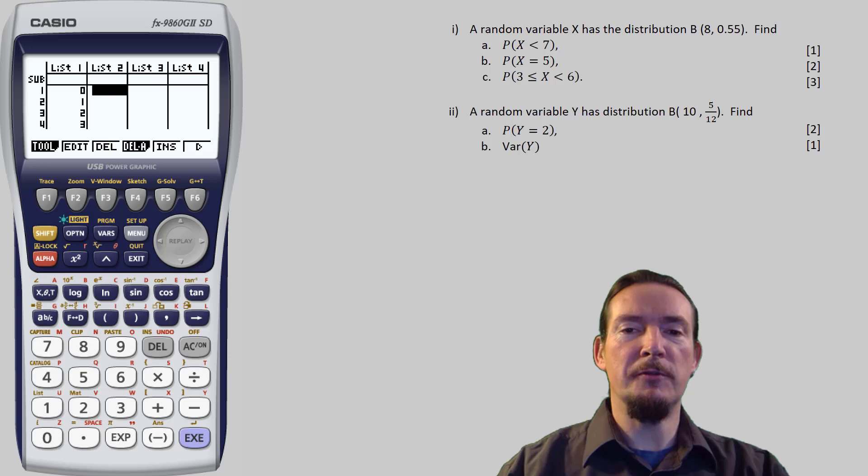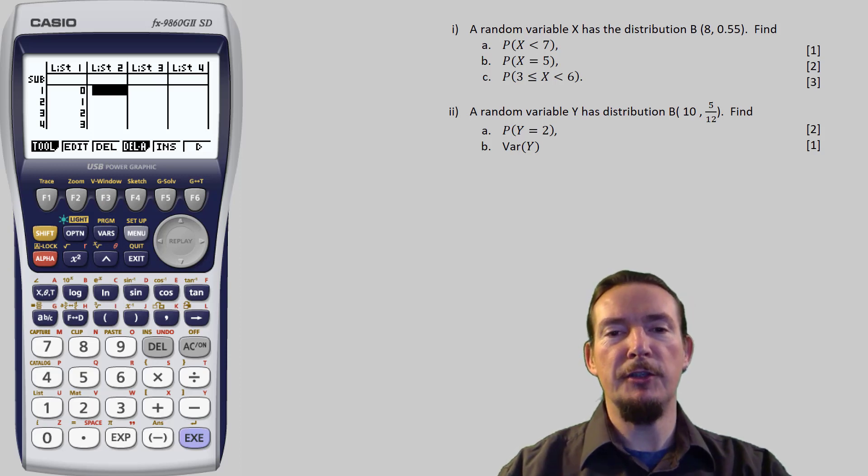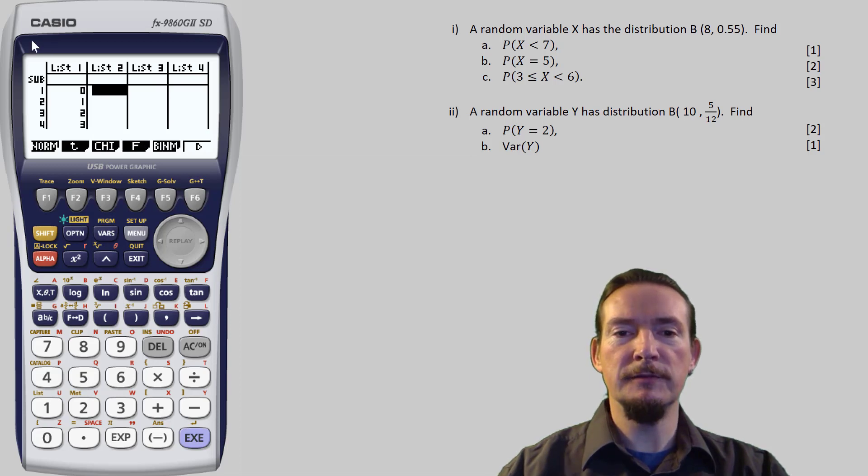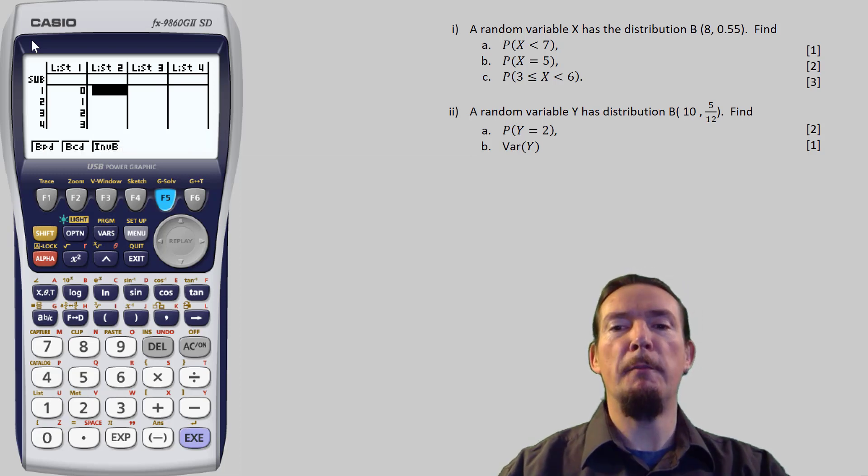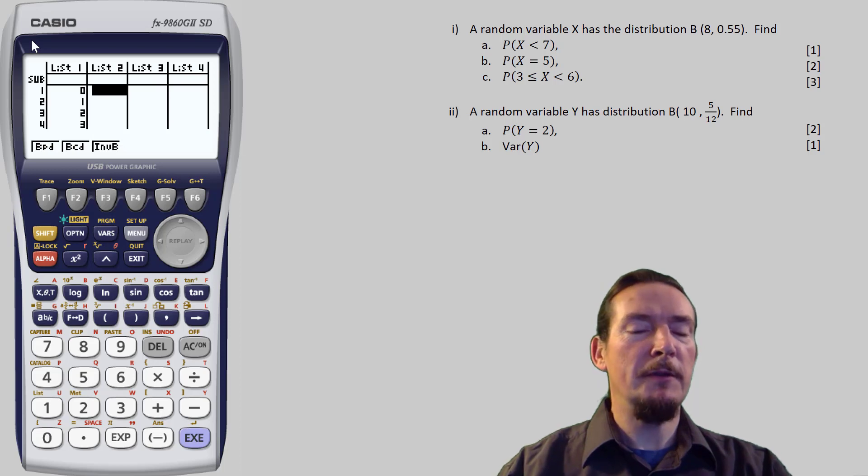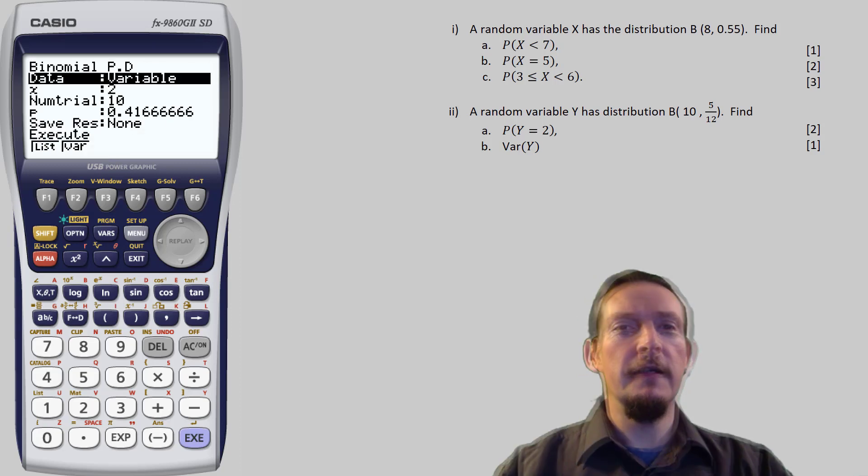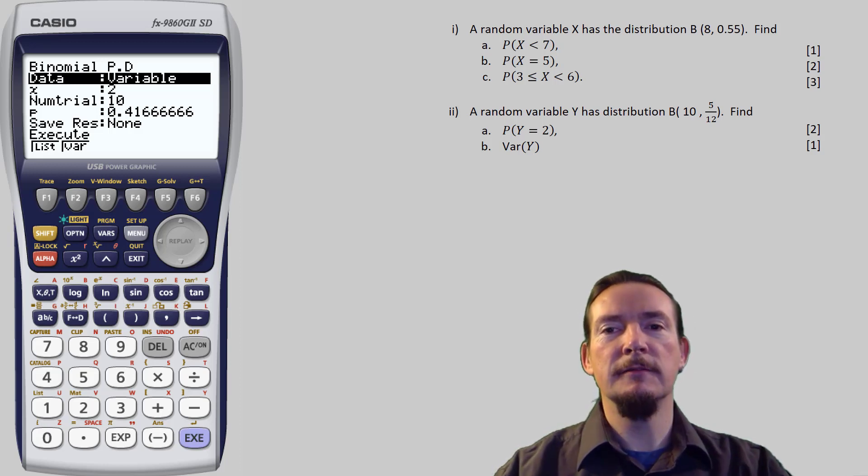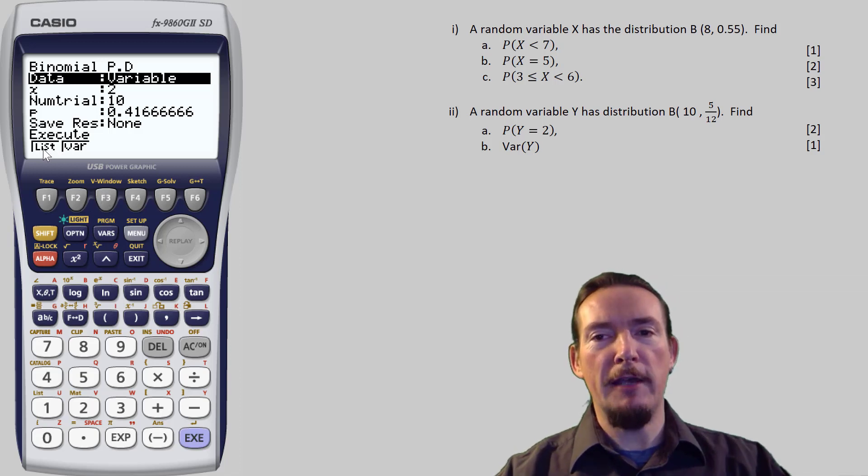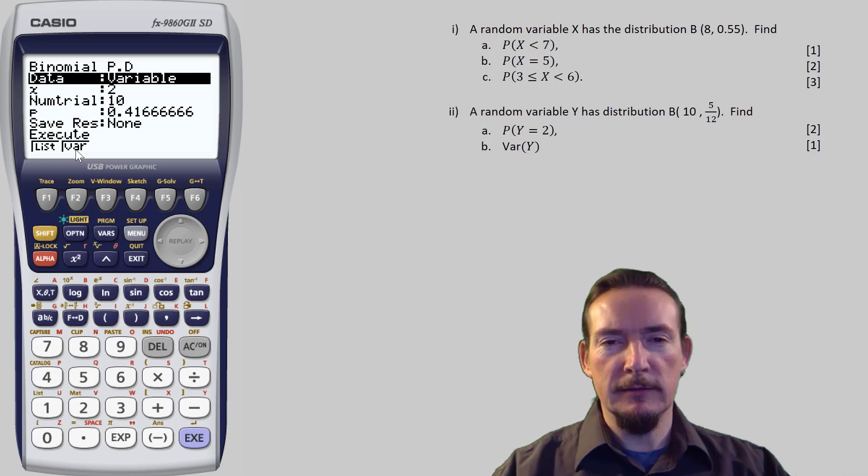OK, so now I've entered all these, I can get the calculator to generate the associated probabilities. To do this, press F5 for the distribution functions. You can see that the calculator can generate quite a few types of distributions here, but we need F5 for the binomial distribution. We're now presented with three further choices. Let's select F1 for the binomial probability distribution first.